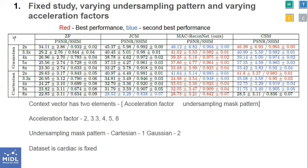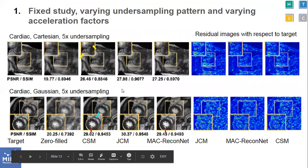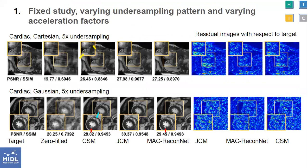In the first study, we keep the anatomical study fixed and vary the undersampling pattern and the acceleration factor. This context is relevant to scenarios wherein Cartesian undersampling is preferred for simplicity, and other kinds of undersampling like Gaussian or spiral are preferred for higher accuracy. The context vector has two elements: one dimension for the acceleration factor and the other for the undersampling mask pattern. There are five acceleration factors and two patterns, amounting to 10 context-specific models for comparison. We see that the metrics of MacReconNet are closer to those of the CSMs and the reconstructed images are qualitatively closer to the target, as indicated by the residual images showing reduced error.